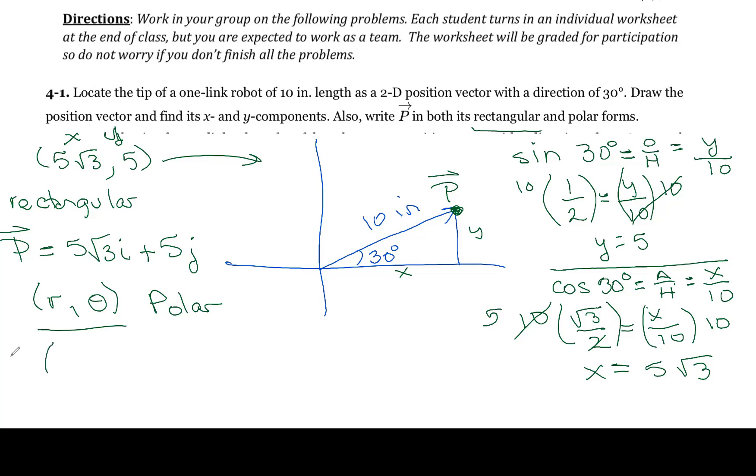And so my r is actually the same as my hypotenuse, or if it was in a circle, my radius, whatever you want to call it, r is going to be 10. And theta is 30 degrees. We actually knew that before we started. That's really all there is to this problem.